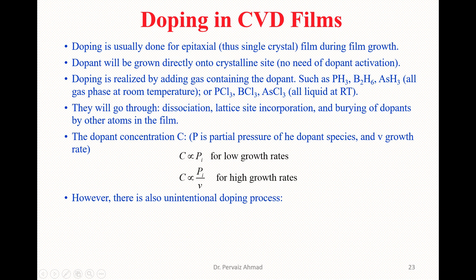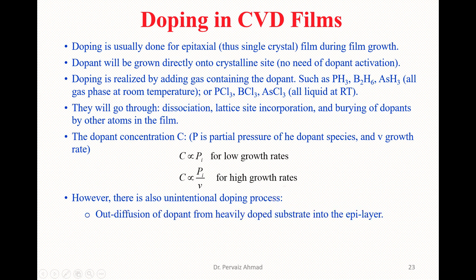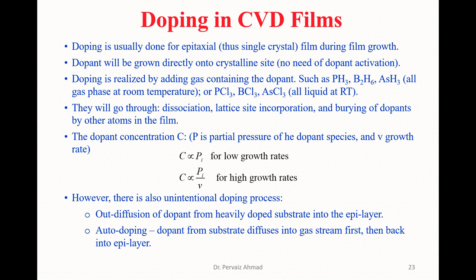One important thing to remember: there is also unintentional doping. Chemical processes may not always follow our desired path, so undesirable effects can occur. Unintentional doping can happen through diffusion of dopant from heavily doped substrates into the epitaxial layers, or through auto-doping — where dopant from the substrate diffuses into the gas stream first and then back into the epitaxial layer.